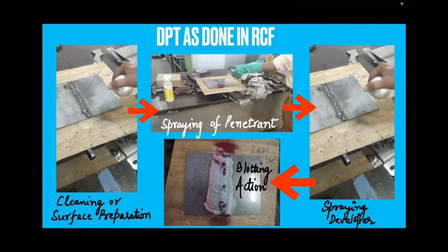As seen in the previous video, the dye penetrant test is done in the same way at RCF. There are four basic steps: first, cleaning or surface preparation of the article; then, spraying the penetrant dye over it and cleaning the excess dye; then spraying the developer over the article so that the dye can come out due to the blotting action, as visible in the picture.